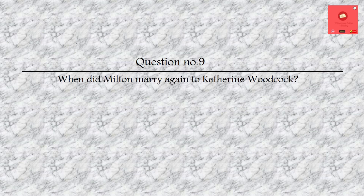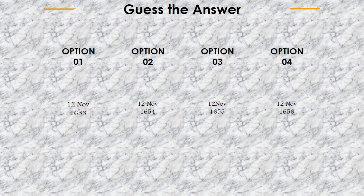Question number 9: When did Milton marry again to Kathleen Woodcock? Options are: 12th November 1653, 12th November 1654, 1655, or 1656. The answer is 12th November 1656.